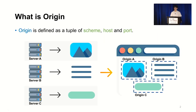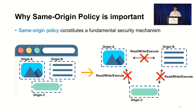First, let me introduce something about origin, which is the core of UX vulnerability. Origin consists of scheme, host, and port, and it can be retrieved from a URL. When a web browser receives resources from multiple servers and renders those into a page, each resource has the address of the server it was received from as its origin. The origin is the key basis of the most important security mechanism in the web browser, called the same-origin policy.